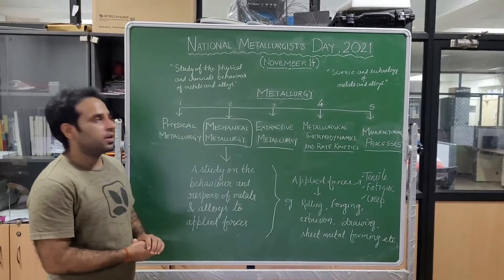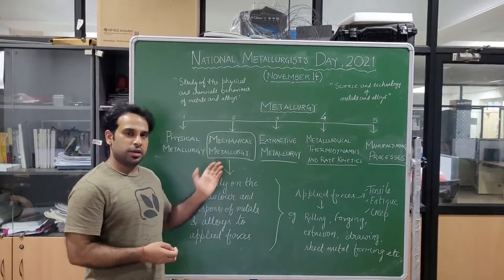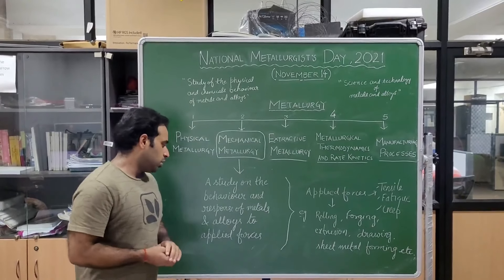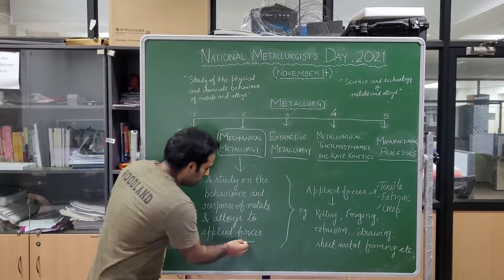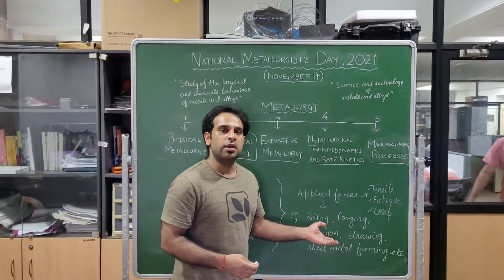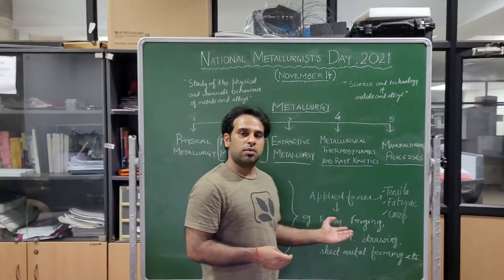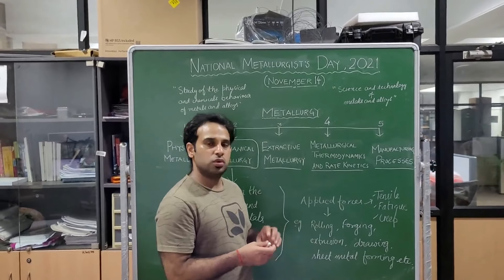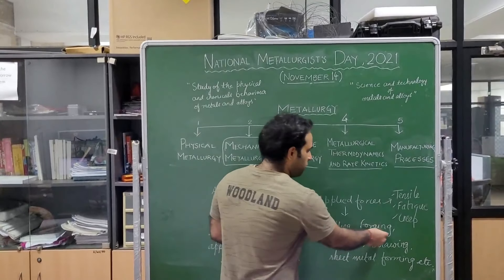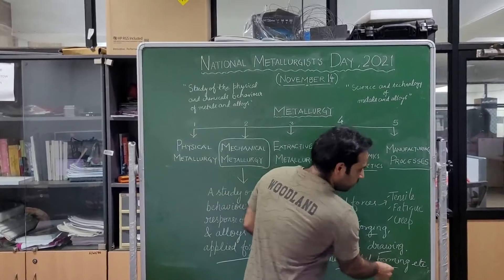Now we will discuss another very important classification of metallurgy — mechanical metallurgy — where we basically study the behavior and response of metals and alloys to applied forces. These applied forces introduce thermal energy into the metal and alloy and into its microstructure by means of thermomechanical processing techniques used to improve the mechanical properties of the material. For example: rolling, forging, explosion, drawing, sheet metals, and forming techniques.